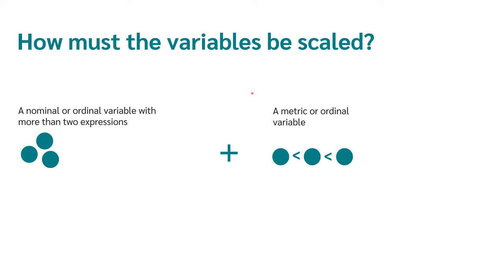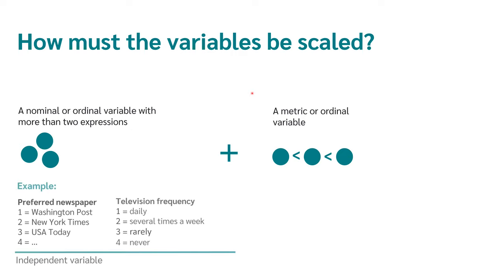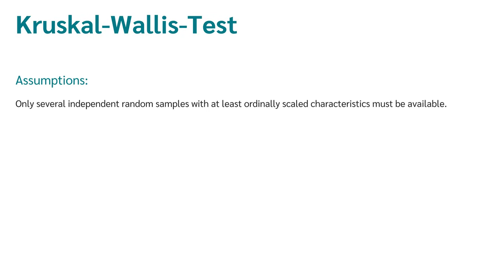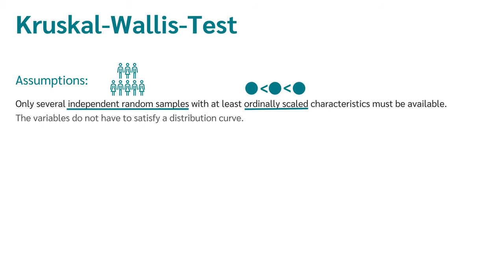A nominal or ordinal variable with more than two values is, for example, the variable preferred newspaper with the values Washington Post, New York Times, and USA Today. It could also be frequency of television viewing with values like daily, several times a week, or rarely. A metric variable is, for example, salary, well-being, or weight of people. The key assumption is that only several independent random samples with at least ordinally scaled characteristics must be available, and the variables do not have to satisfy a distribution curve.